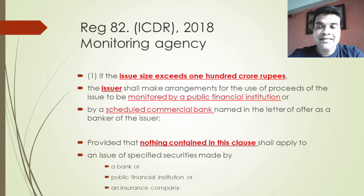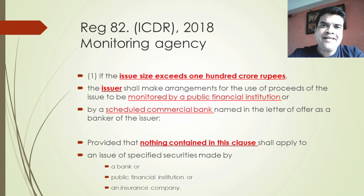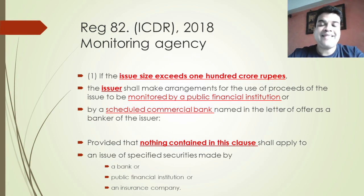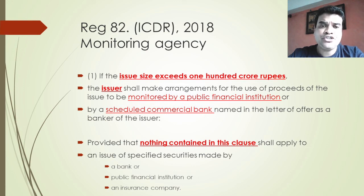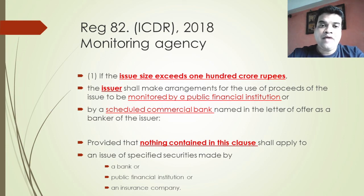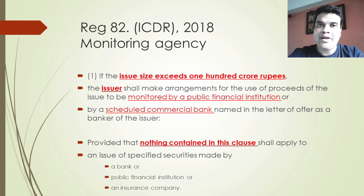We move on to the Issue of Capital Disclosure Requirements 2018, Regulation 82, which talks about the monitoring agency. Not in every issue do you need to appoint a monitoring agency — you appoint one when the issue size exceeds Rs.100 crore. Who are these monitoring agencies? They can be a public financial institution or a scheduled commercial bank, as named by the issuer in its offer document. Nothing in this clause shall apply to the issue of specified securities made by banks, public financial institutions, or an insurance company.